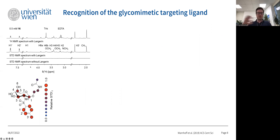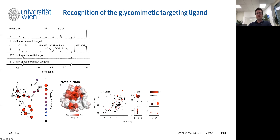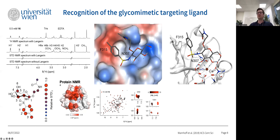Using saturation transfer difference NMR — a technique where you saturate the protein and the saturation is transferred to the binding and exchanging ligand, leaving a negative imprint of the protein on the small ligand — we knew how this ligand would bind into the binding site of Langerin. We found that the tosyl group binds very closely to the protein, while the linker side of the carbohydrate does not. Together with protein NMR showing which amino acids are perturbed upon binding, we could find where the small molecule binds on the protein.